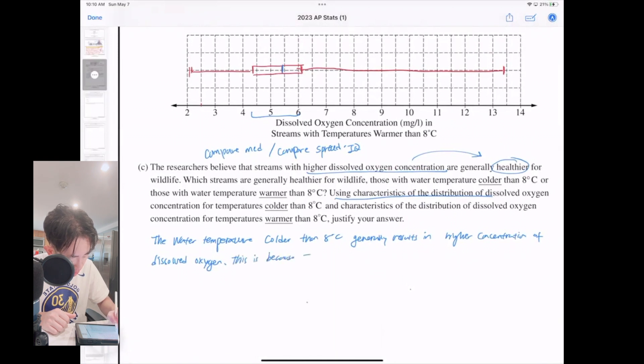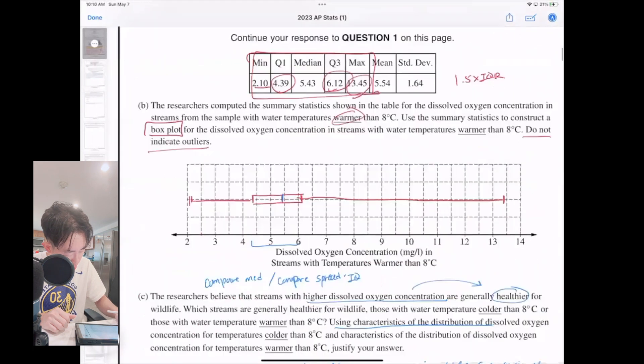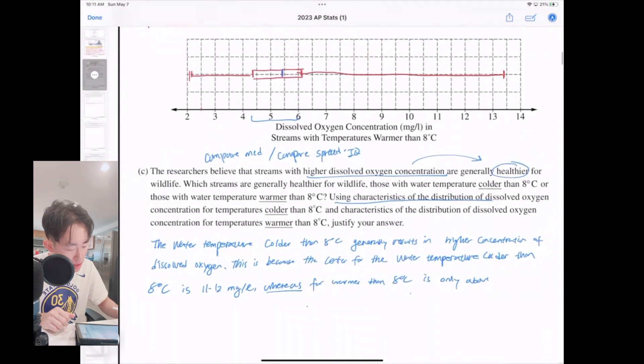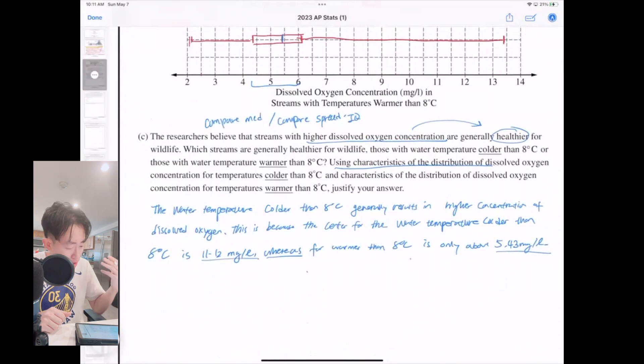Because if you compare the spread of the IQR or the 50% of the data set resulting in the range from here to there, that also results in a higher concentration for colder—that clearly will prove your point. So the first thing we want to say is comparing the center. This is because the center for the colder water, for the water that is colder—I'm just going to use the full context—for the water temperature colder than 8 degrees Celsius, it was somewhere between 11 to 12, 11 to 12 milligrams per liter. Whereas—that's my favorite word to use as a comparison—whereas for warmer, warmer than 8 degrees Celsius, was only about 5.43. They specifically said that that was the median, which means higher degree of concentration of oxygen, which leads to healthier wildlife.